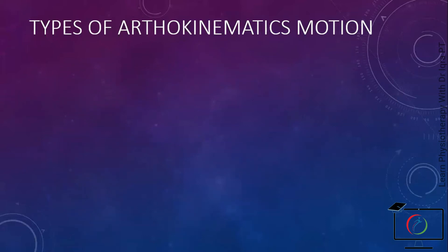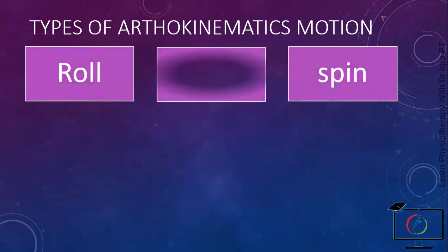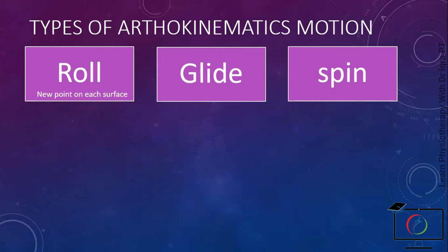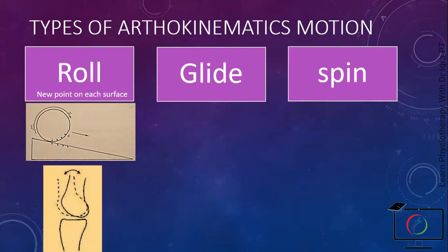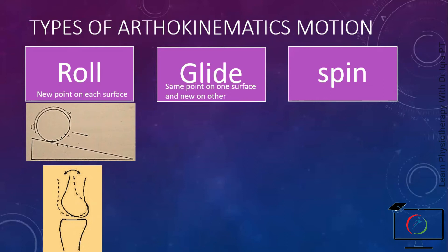There are three types of orthokinematic motion: roll, glide, and spin, which are either translatory or rotatory movements. In rolling, one surface rolls on the other, and a new point on each surface comes into contact throughout the movement. For example, if you roll a ball on a floor, a new point on the ball comes in contact with a new point on the floor — the same happens with bones. In glide motion, the same point on one surface comes in contact with new points on the other surface; it is essentially a parallel movement.